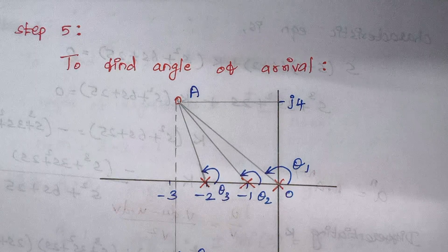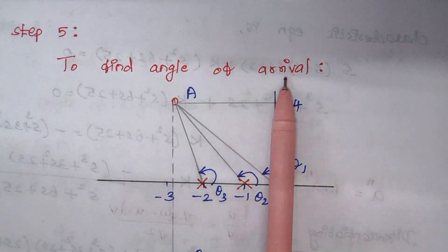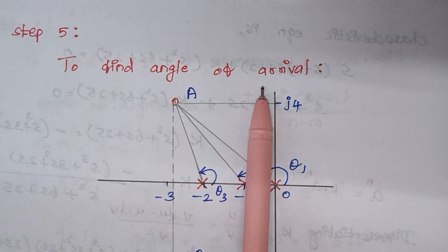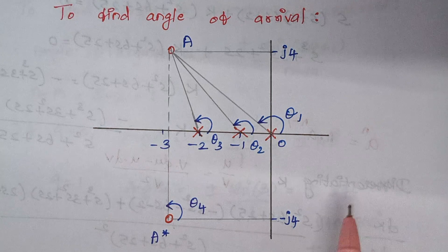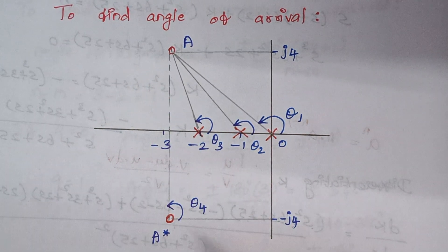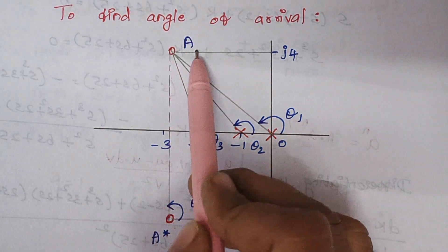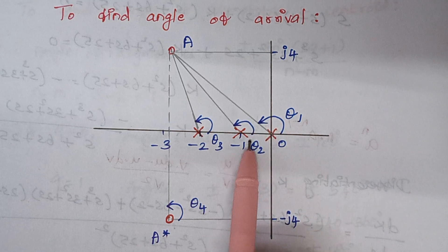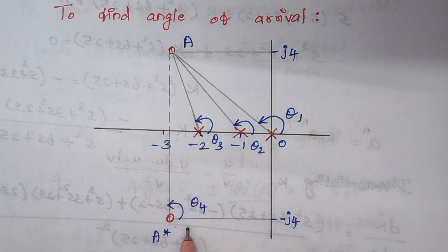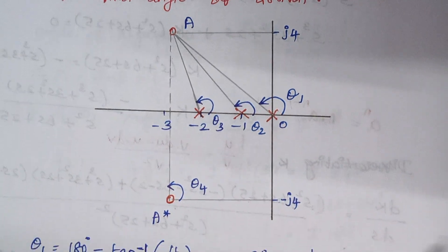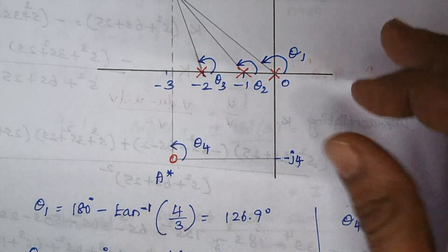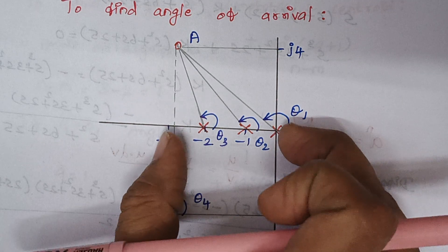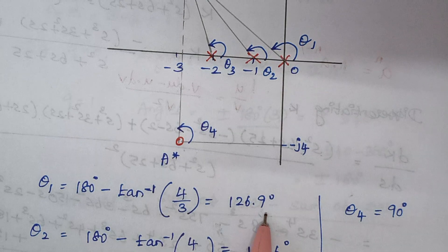Step 5 is to find the angle of arrival. Since we have complex zeros, we use the term angle of arrival rather than angle of departure. In the rough sketch we have three poles and two zeros. Considering complex zero A, we measure angles from the remaining zeros and poles — theta 1, theta 2, theta 3, and theta 4. Theta 1 is 180 minus tan inverse of 4 divided by 3, giving the corresponding angle value.